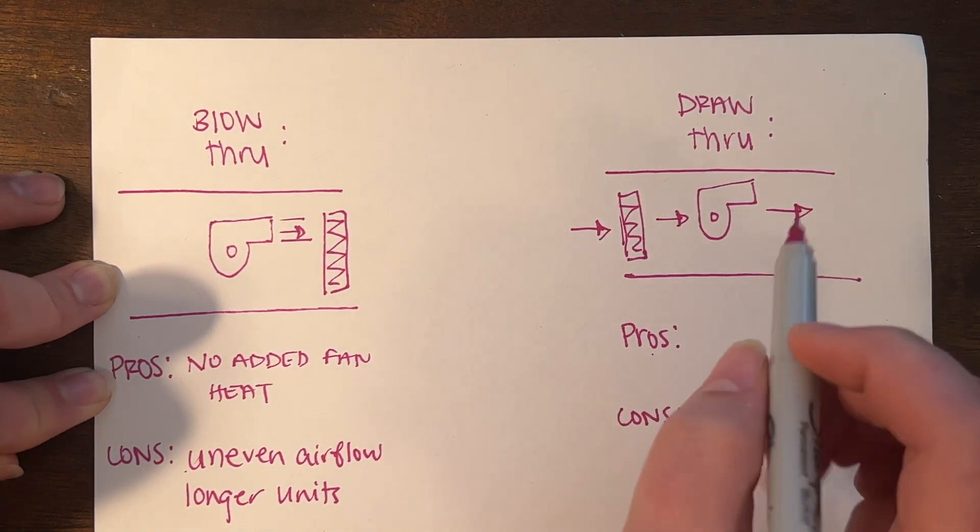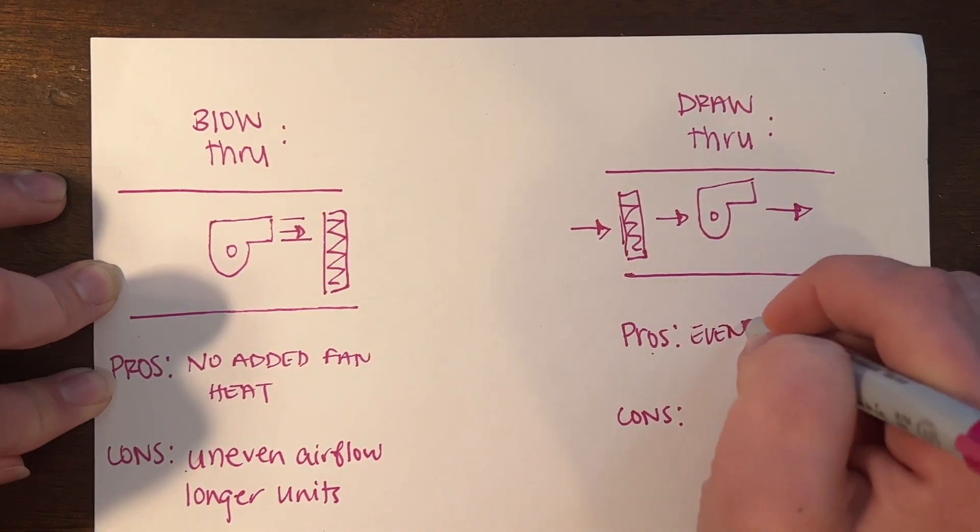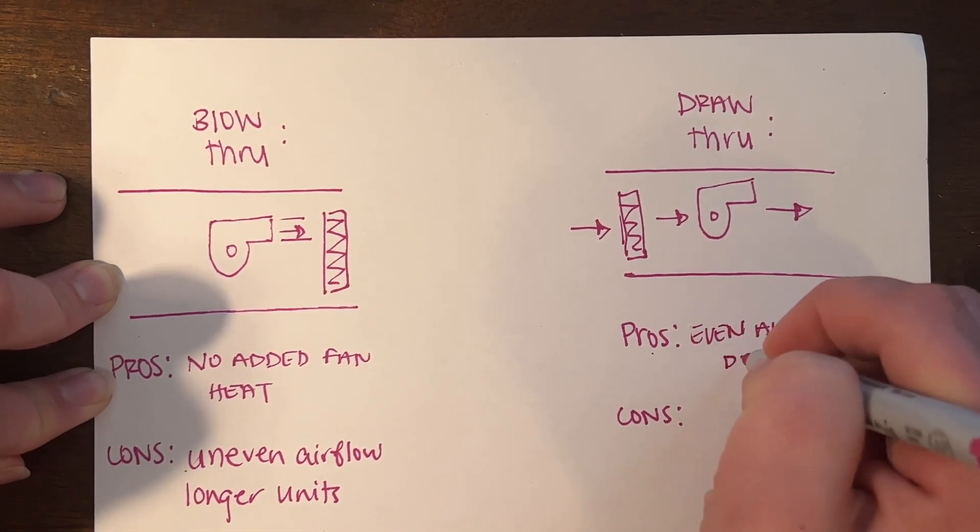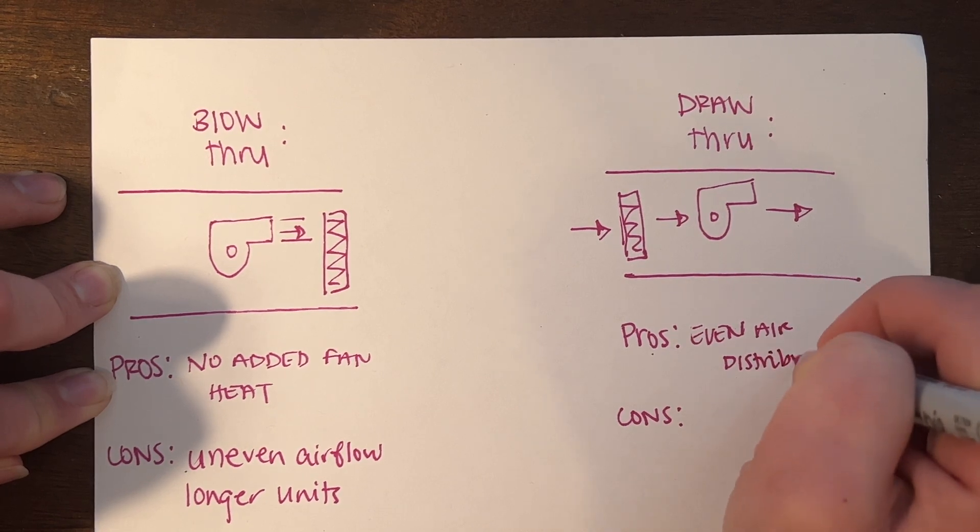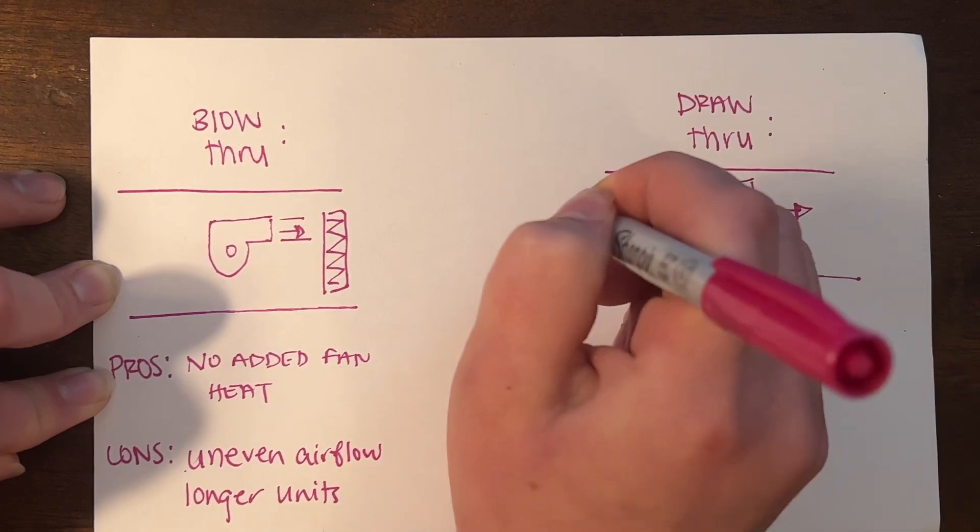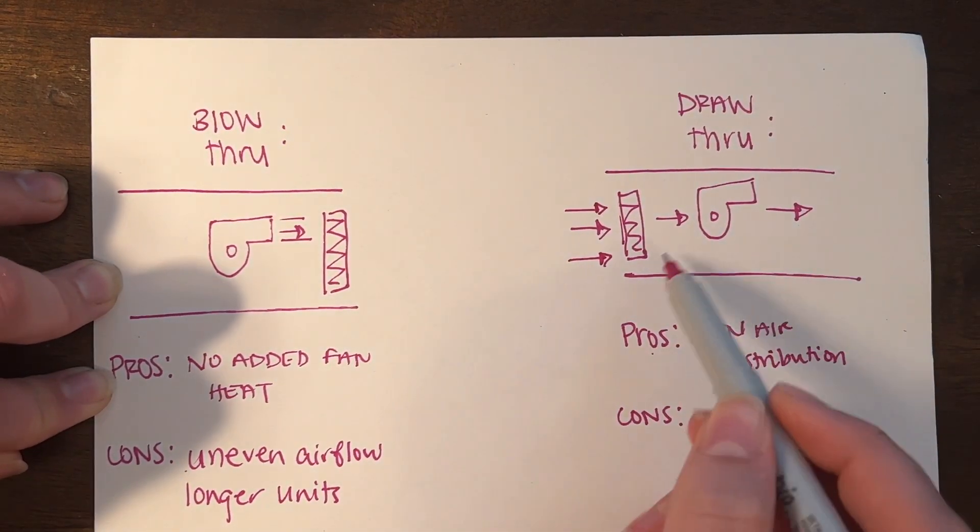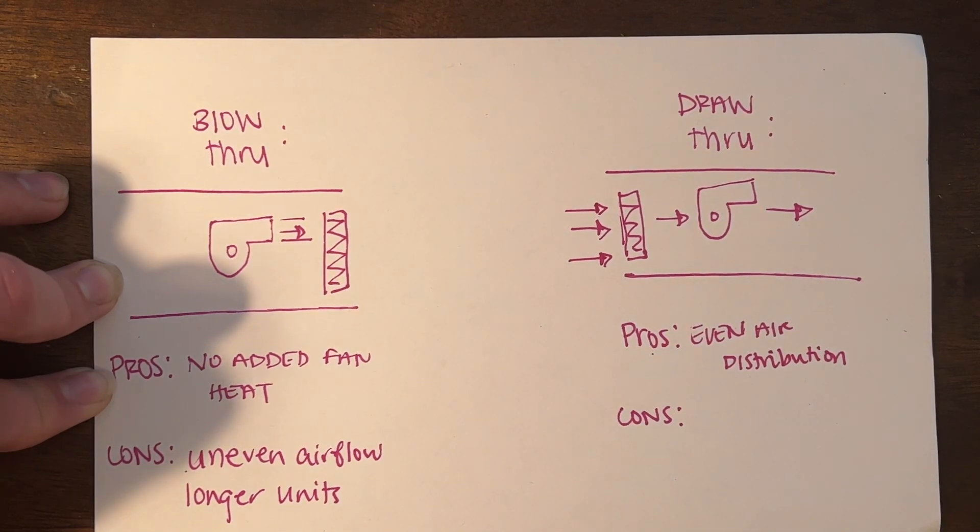Pros with this setup: you have even air distribution at your coil, so you know that your coil will see the entirety of the air before it goes into your fan and into your system.